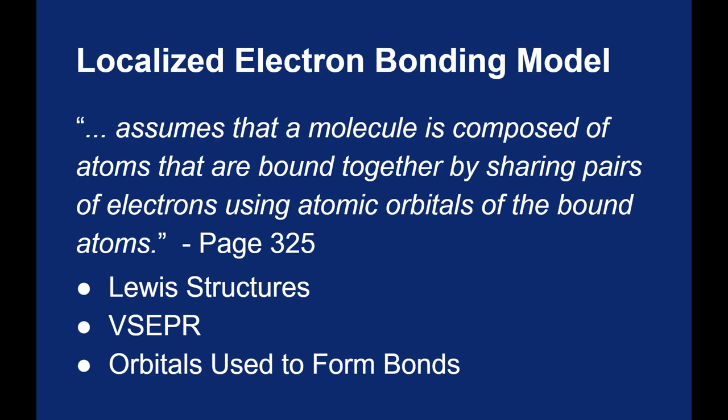The key line that atoms are bound together by sharing pairs of electrons using atomic orbitals is our focus today. In order for atoms to share electrons, in order for atoms to form covalent bonds, they have to share their orbitals because that's where the electrons live. Covalent bonding occurs when an orbital of one bonded atom overlaps with an orbital in another bonded atom.